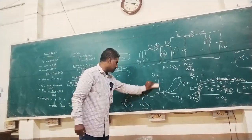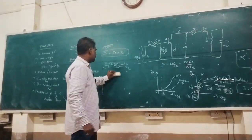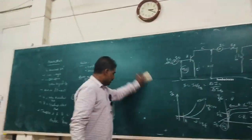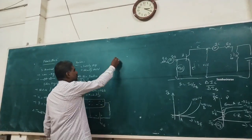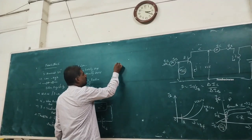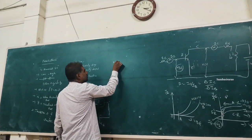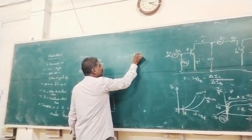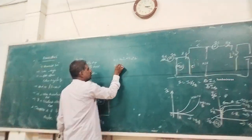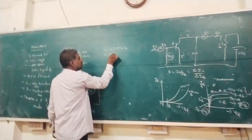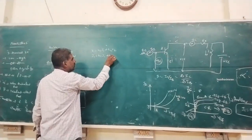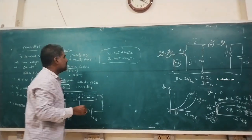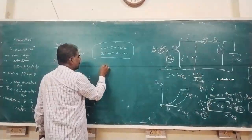Next, the transistor as a two-port network is analyzed using hybrid parameters. The hybrid equations are: V1 = H11·I1 + H12·V2, and I2 = H21·I1 + H22·V2. These form the complete hybrid model equations.